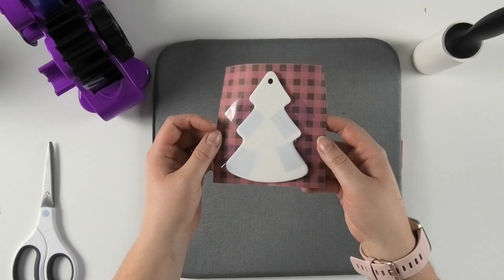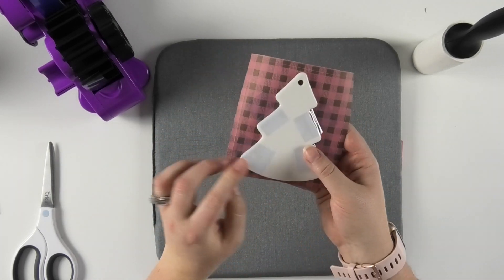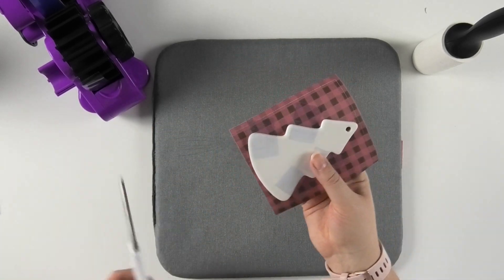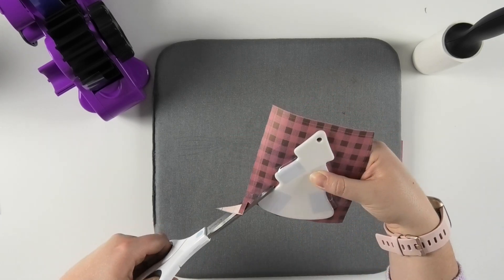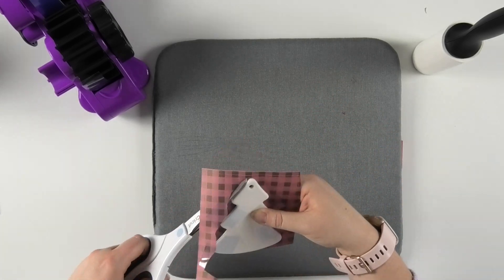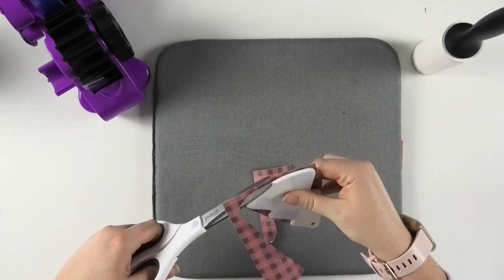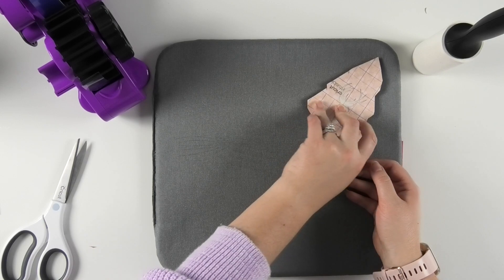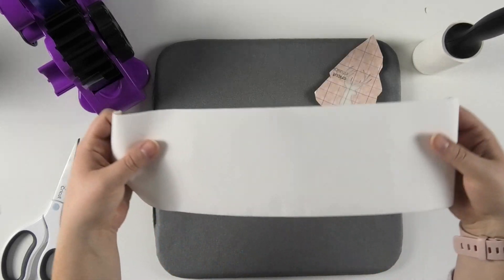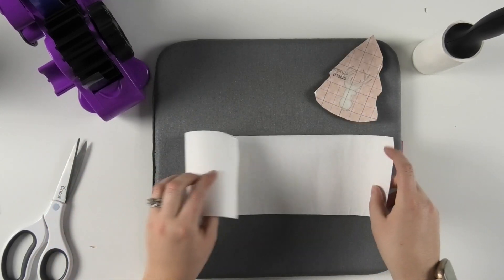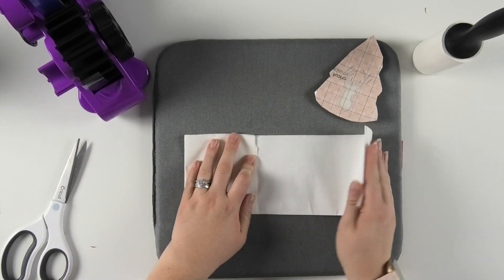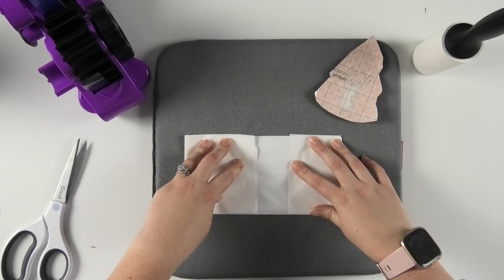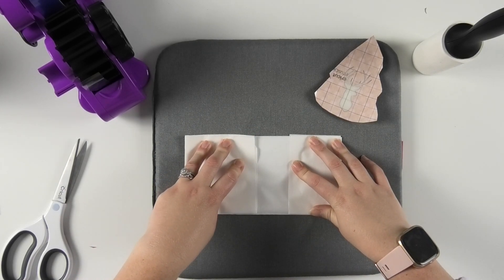Then because I have so much leftover infusible ink around the outside of my tree, I am going to take my scissors and cut closely to the edges to remove any of the excess. Then once the excess is trimmed away, we are ready to apply this infusible ink. So next, I'm going to lay down some butcher paper that I got in my infusible ink package, and I'm going to be putting some on the bottom because I know that some is going to bleed onto my pad.